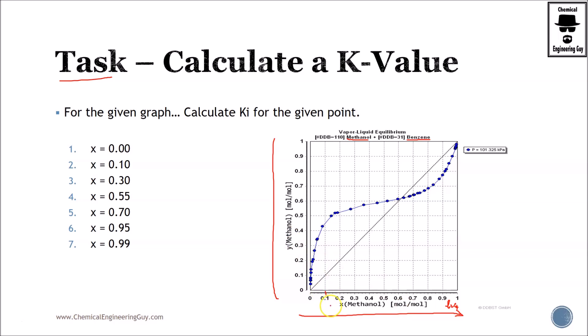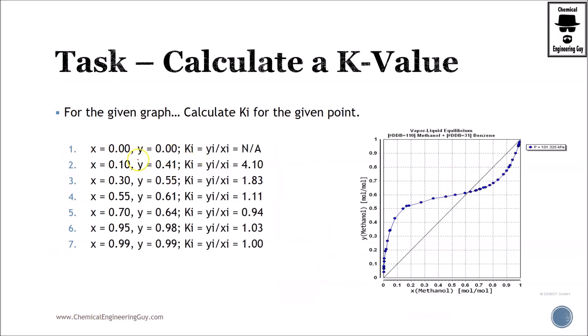So for a 10% of methanol in the mixture we will require a value about 44%. And we need to calculate the K values for all these values. Remember that K value will depend on the composition. So what we need to do is obtain the vapor composition for the given liquid compositions.